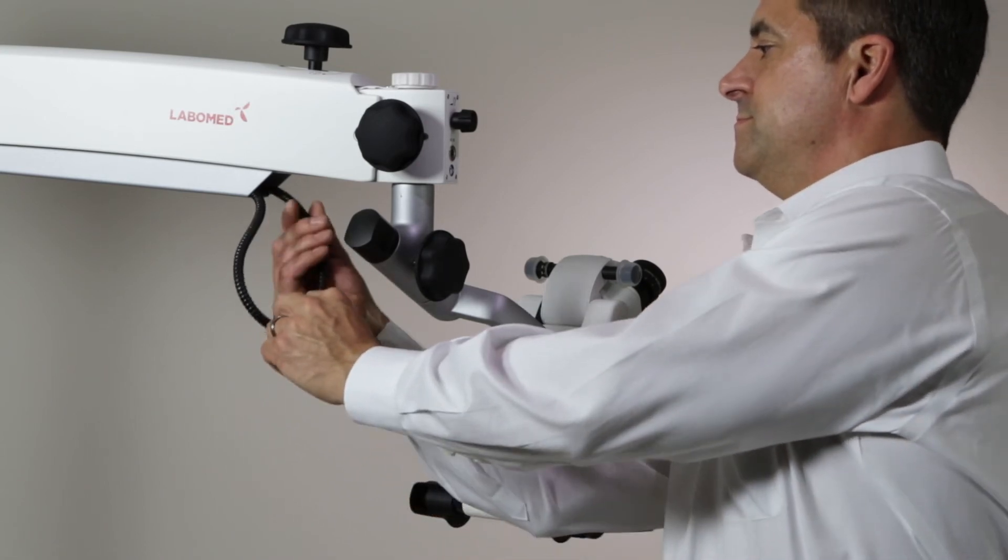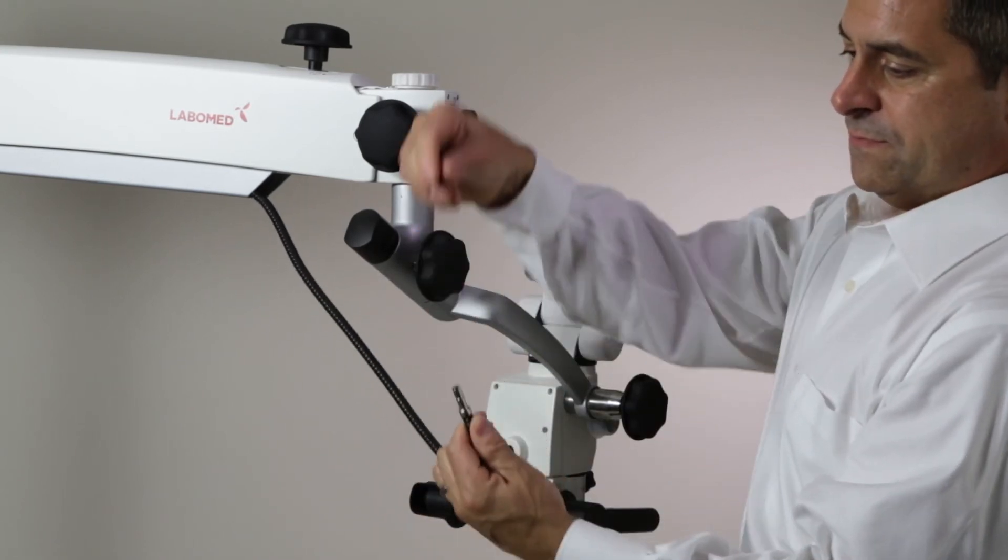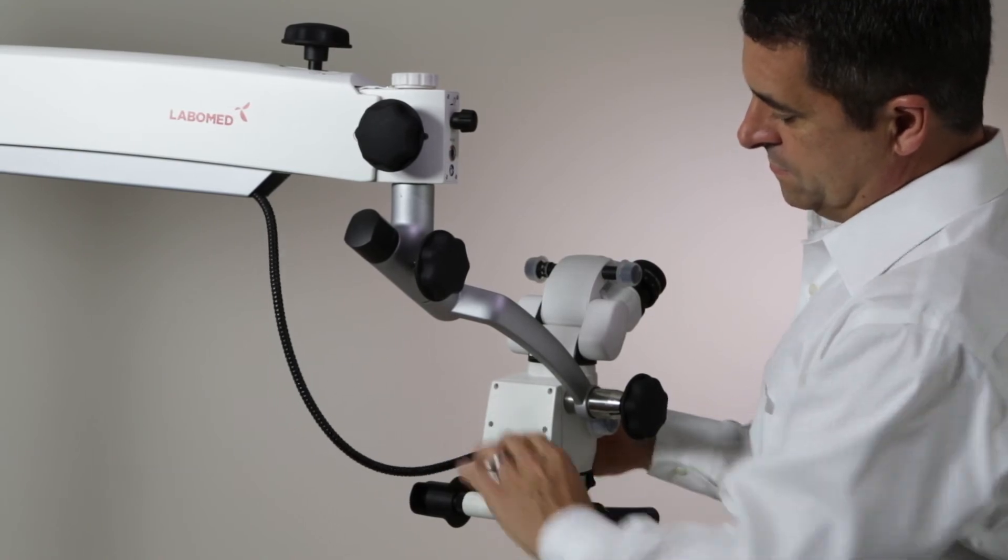Remove the nylon tip from the fiber optic cable and attach the cable to the slot provided on the back of the microscope.